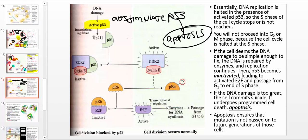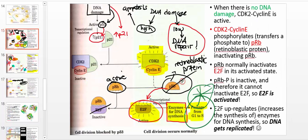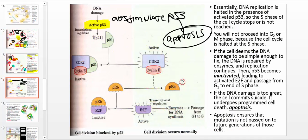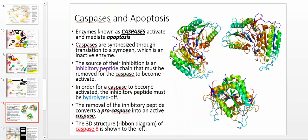If the DNA damage is too great, you do apoptosis. If it's not great enough and the cell can fix it, you repair the damaged DNA, reactivate CDK2, go into the S phase, and the cell cycle continues normally. The following video will be dedicated to apoptosis. Hopefully this video gave you intuition on the mechanism by which the cell stalls entry into the S phase. In the next video we'll talk about caspases and apoptosis.